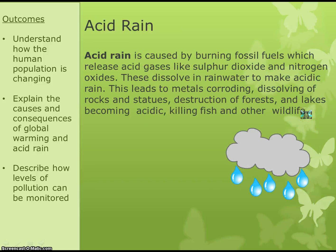The other problem is acid rain. Acid rain is caused by the burning of fossil fuels, which release gases like sulphur dioxide and nitrogen oxides. These dissolve in rainwater making the rain acidic, and when it falls it kills things: it kills fish by making lakes acidic, it can kill trees, and it also destroys man-made structures — anything that can be eroded by acid gets damaged.